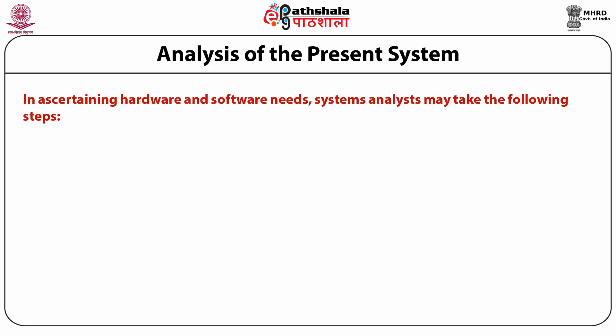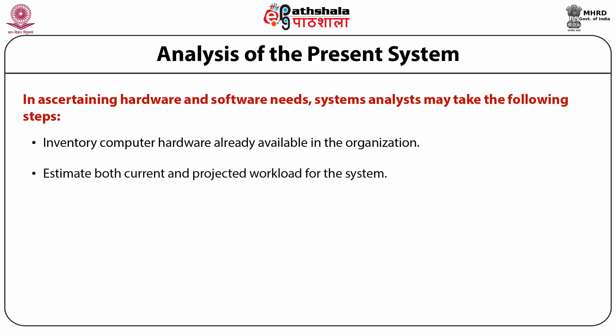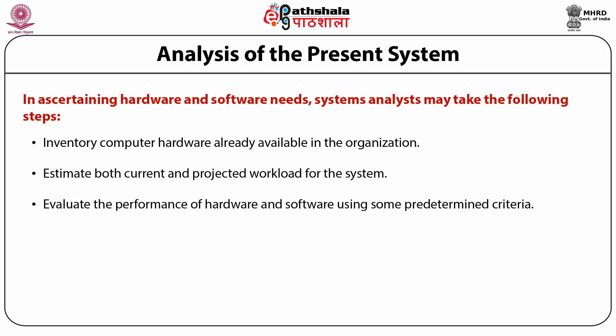In asserting hardware and software needs, system analysts may take the following steps: first, inventory the computer hardware already available in the organization; second, estimate the current and projected workload of the system; third, evaluate the performance of the hardware and software using predetermined criteria; then choose the vendor according to the evaluation plan; and finally, proceed with acquisition of hardware and software from the selected vendor.